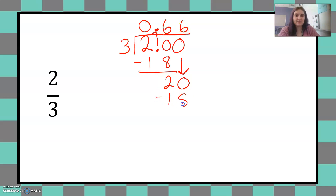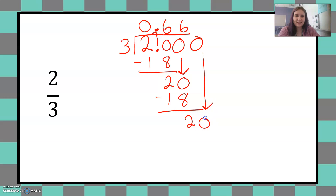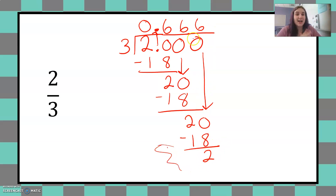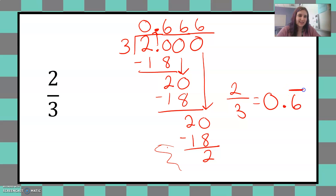Six times three is 18. 20 minus 18 is two. And I can just keep adding zeros as placeholders — it doesn't matter, I can have a thousand zeros after and it still equals two. Bring it down again. Three goes into 20 six times. Six times three is 18, and I get a two again. Are you starting to see the pattern? This will go on forever — I'm going to keep putting a six up at the top. So I can tell that this pattern will repeat forever. Instead of continuing to write it all out, we use repeating decimal notation. Two thirds equals 0.6 repeating.